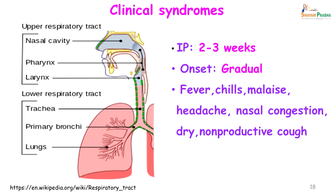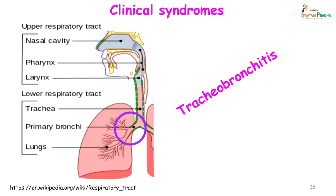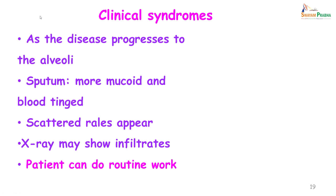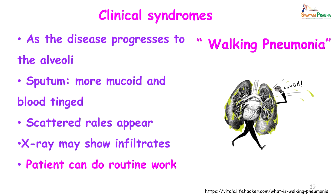The clinical syndrome: the incubation period of the disease is 2 to 3 weeks, onset is gradual. Fever, chills, malaise, headache, nasal congestion and a dry non-productive cough are the common features. At this stage this is tracheobronchitis. As the disease progresses to the alveoli the sputum becomes more mucoid and blood-tinged, crackles appear and the x-ray may show infiltrates. At this stage the patient can do his routine work and therefore the disease is referred to as a walking pneumonia.